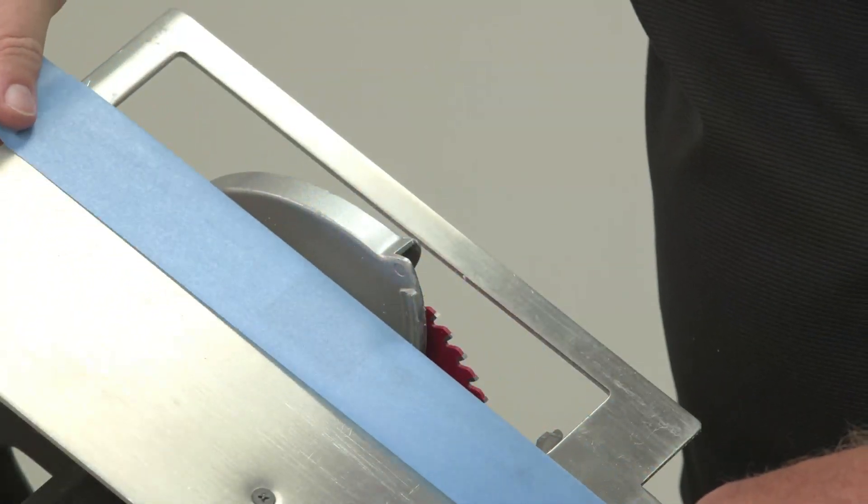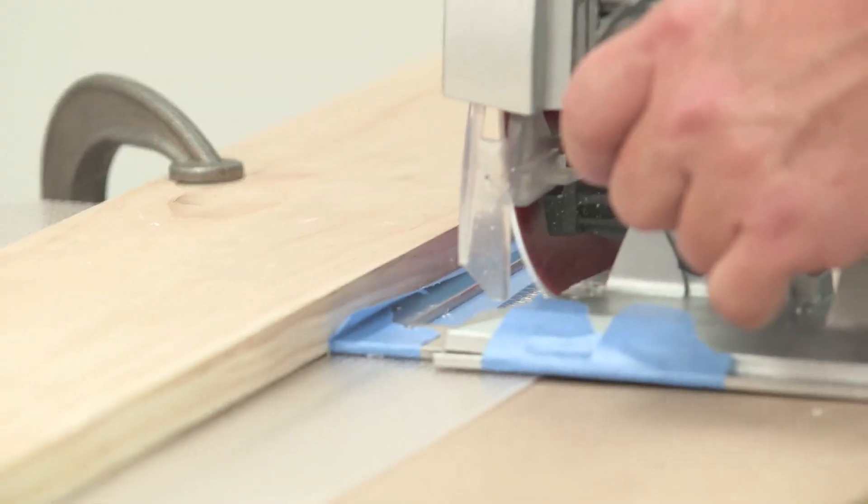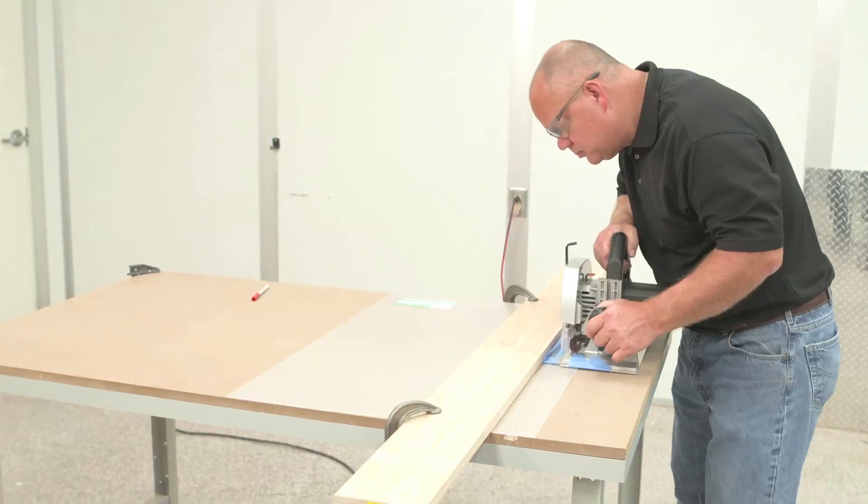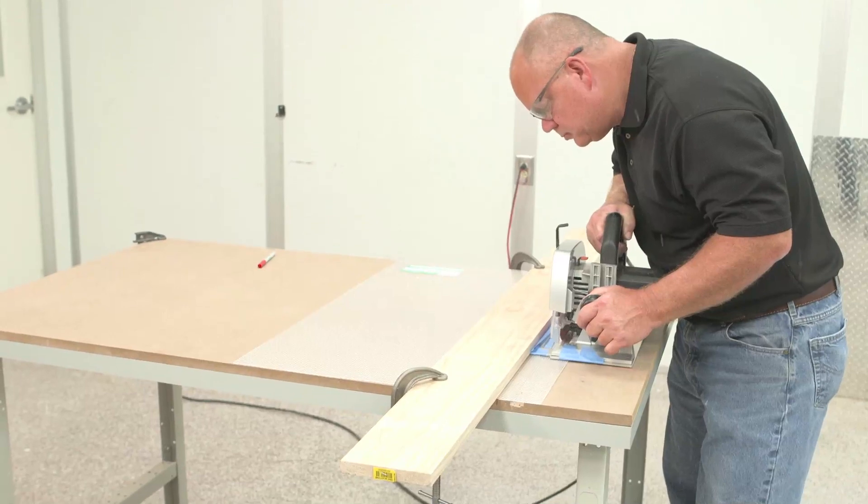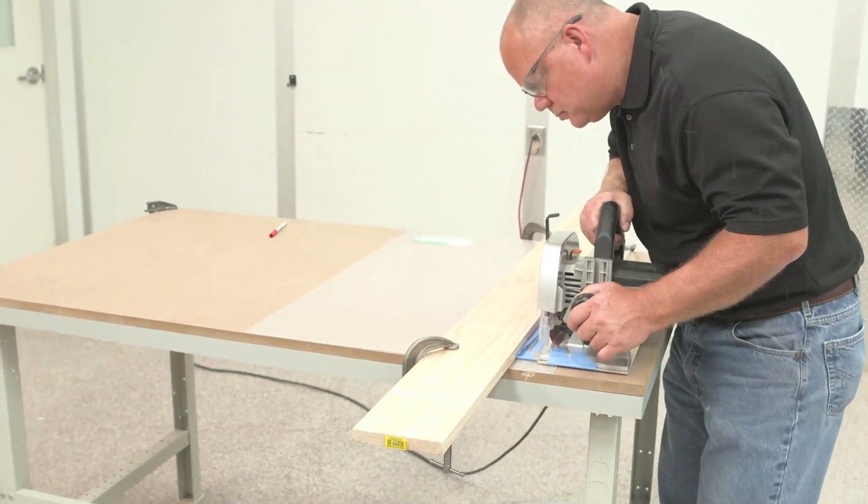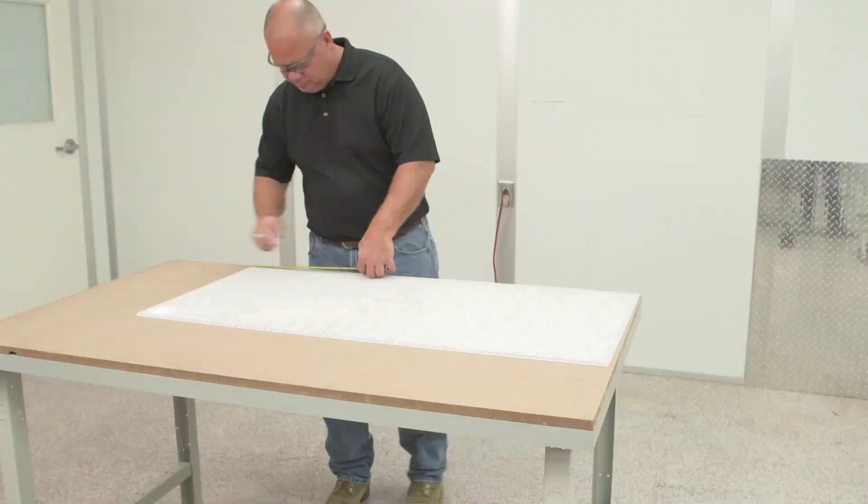If cutting large quantities of lighting panels, a table saw or circular saw with a carbide-tipped triple-chip saw blade is recommended. Avoid scratching the panels by applying painter's tape to the saw's base plate or to the panels.